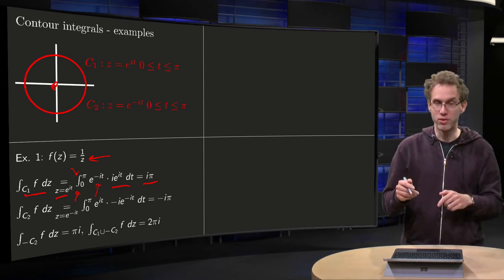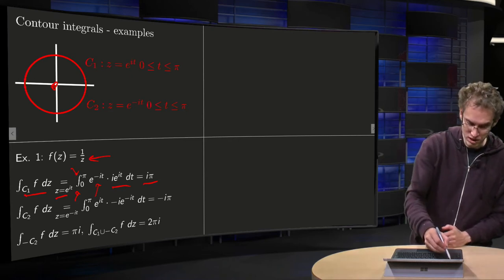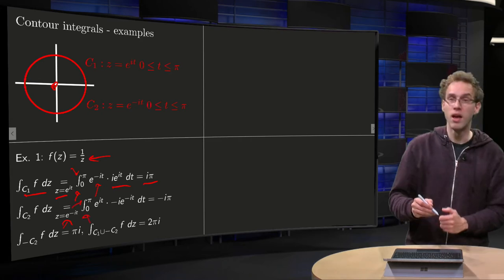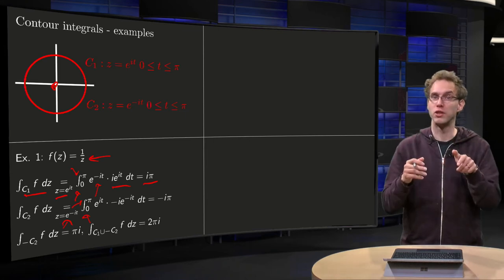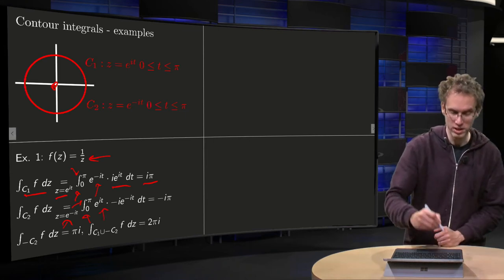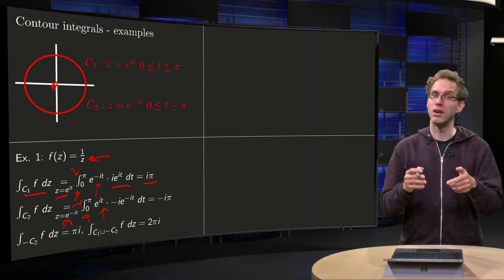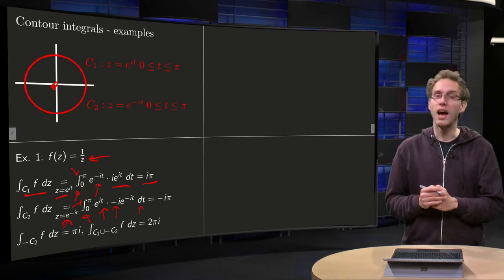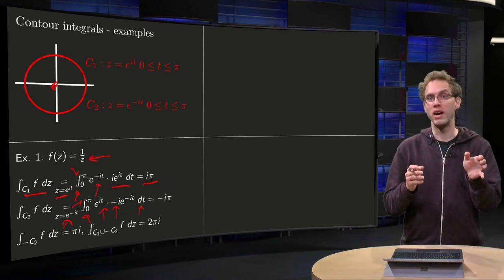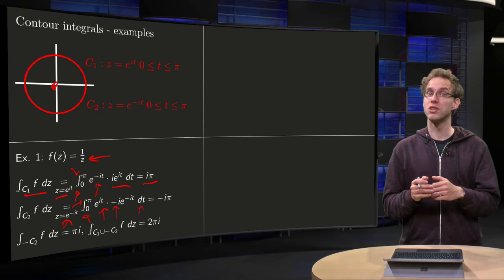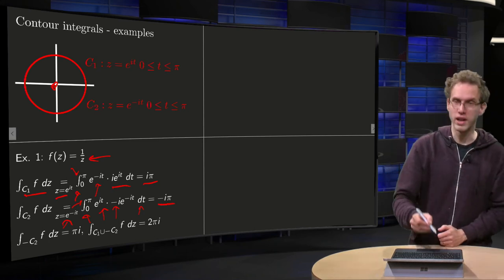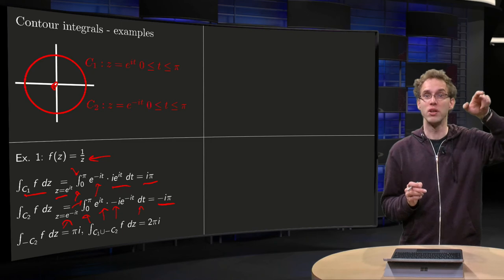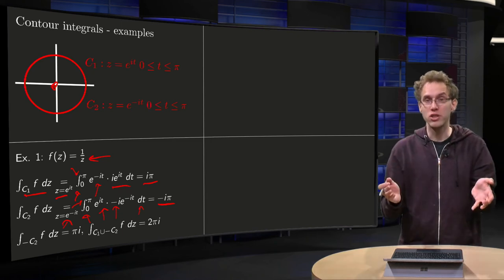What about the second path? Now we go downwards. We have a different parameterization, z equals e to the power minus i t. Again, t runs from 0 to pi. Then 1 over z becomes e to the power i t, times dz. And dz becomes now minus i times e to the power minus i t dt. And you see, again, the e to the power minus i t and the e to the power i t cancel out. So we integrate minus i from 0 to pi, so this yields minus pi i. So via the top one gives pi i, via the lower one gives minus pi i. So you see, the results are not the same in general.